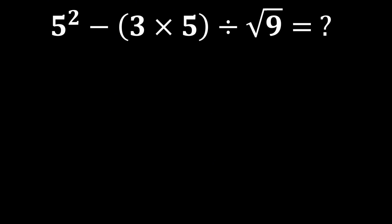5 to the power of 2 minus 3 multiplied by 5 divided by the square root of 9. According to PEMDAS, we first calculate inside the parentheses. 3 multiplied by 5 gives us 15, and the expression becomes 5 to the power of 2 minus 15 divided by the square root of 9.